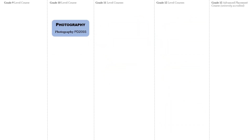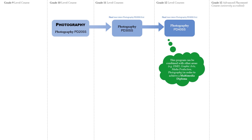Photography is an optional course that can be taken starting in Grade 9 or 10. The next levels of coursework progress from the previous courses. This program can be combined with other areas — for example, Digital Media Design, Graphic Arts, and Media Production — in order to achieve a Multimedia Diploma.